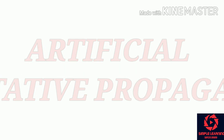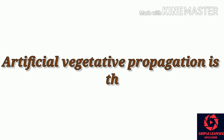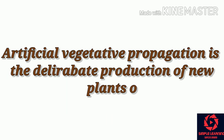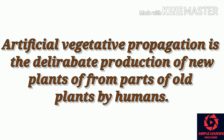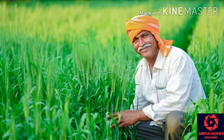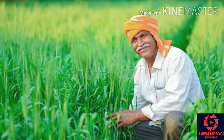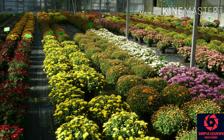Before knowing about the types of propagations, we need to know what is Artificial Vegetative Propagation. Artificial Vegetative Propagation is the deliberate production of new plants from parts of old plants by humans. In the present days, more farmers and horticulturists are using these techniques to improve their yielding and to get more profits.